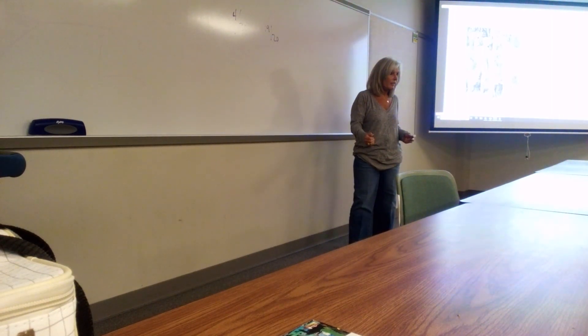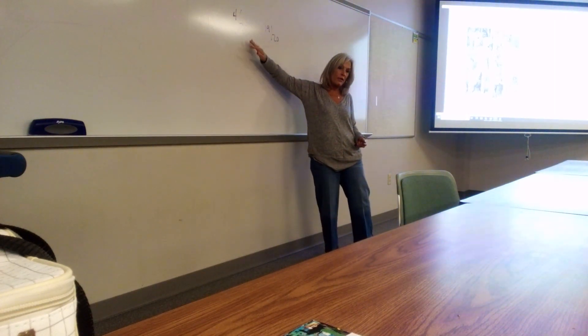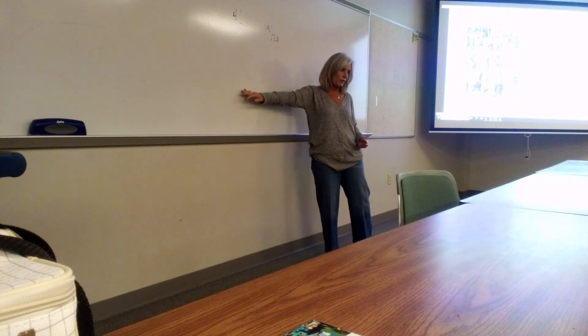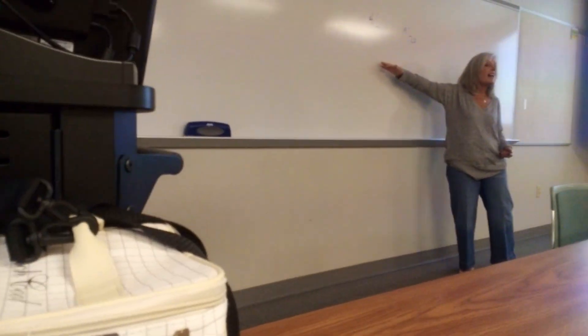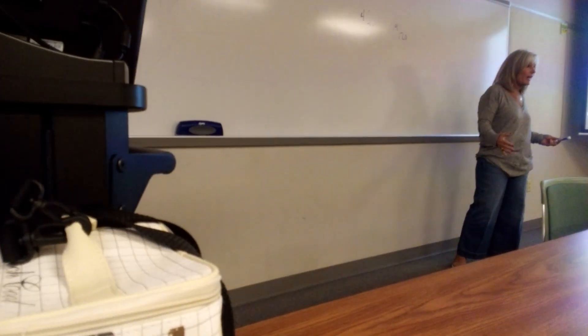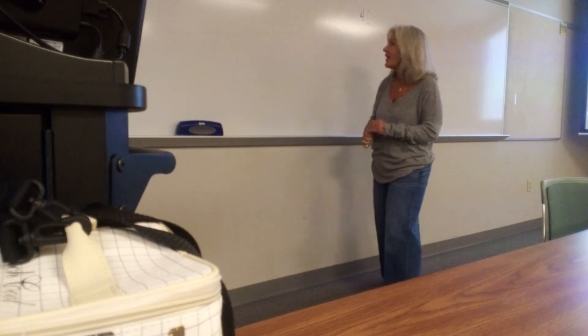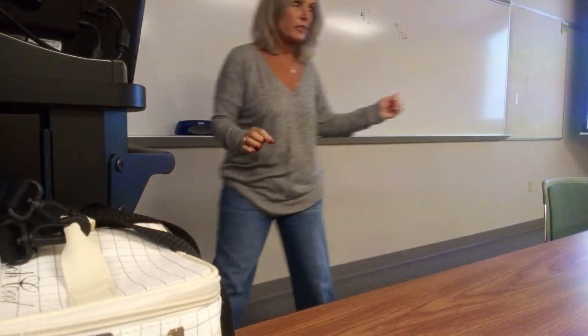With printmaking, the higher the number of prints, the lower the value you want in the edition. With sculptures, they may only make seven before the mold breaks down. Then they have a mold-breaking party and destroy it so no one else can recreate that sculpture. These are called editions.